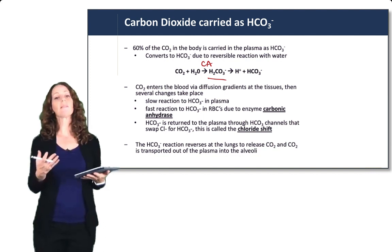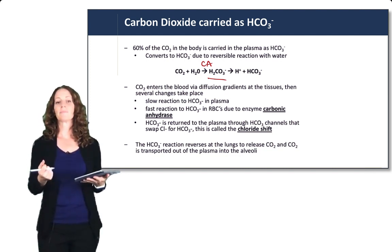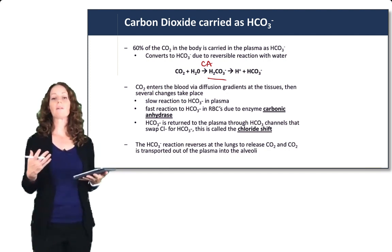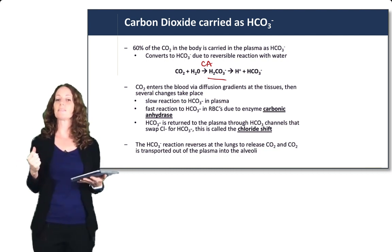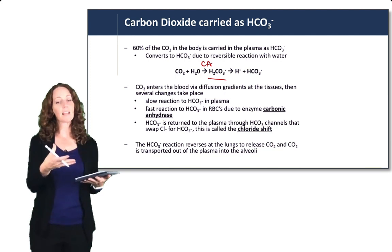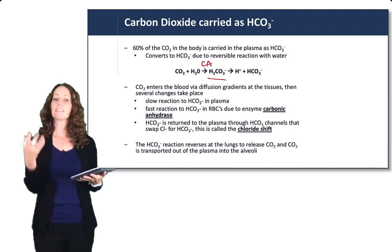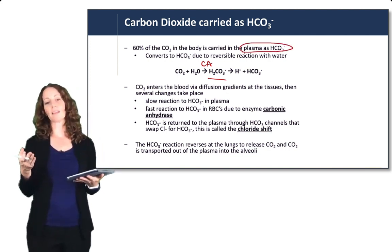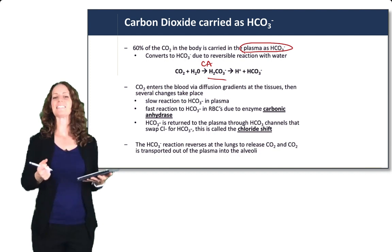In the red blood cells, we have a lot of carbonic anhydrase, so there will be a fast reaction to bicarbonate. The bicarbonate will then be returned to the plasma through a chloride-bicarbonate channel located in the membrane of the red blood cells. So all of this together accounts for that 60% of bicarbonate within the plasma — the red blood cells help facilitate it with the carbonic anhydrase enzyme.